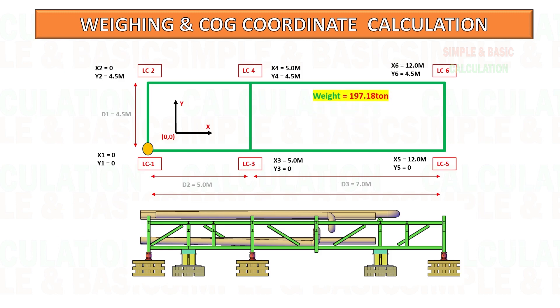Summary: Based on weighing method, we get the total weight of the cargo is 197.18 ton, and center of gravity for x direction is 5.46 meter, and for y direction is 2.27 meter.